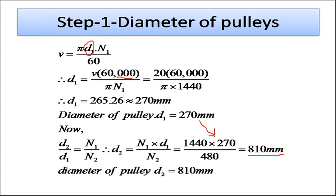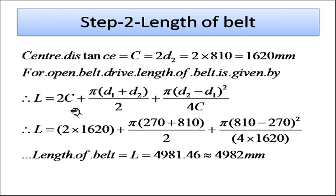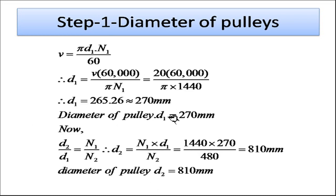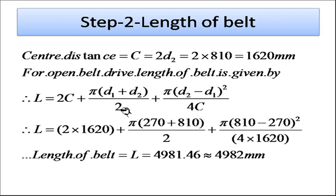Next, we calculate the length of belt for an open belt drive. The formula is: L = 2C + π(d1 + d2)/2 + (d2 − d1)² / (4C). Center distance is given as two times the larger pulley diameter, so C = 2 × 810 = 1620 mm. d1 = 270 mm and d2 = 810 mm.